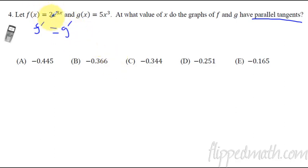So if we take the derivative of F prime, that's going to be 2E raised to 3X times 3 with the chain rule, then that has to equal 15X squared. So in order to figure out when these two things equal each other, you can just graph them.